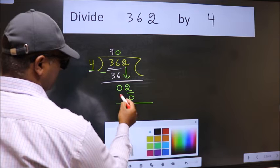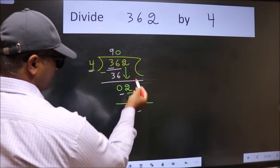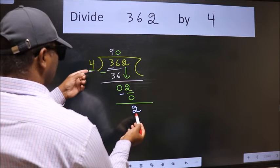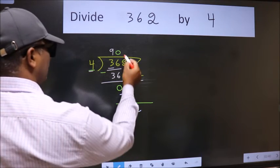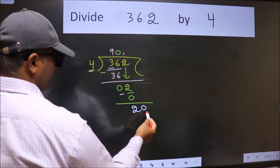Now we subtract. We get 2. Over here, we did not bring any number down and 2 smaller than 4. So now we can put dot and take 0 here. So, 20.